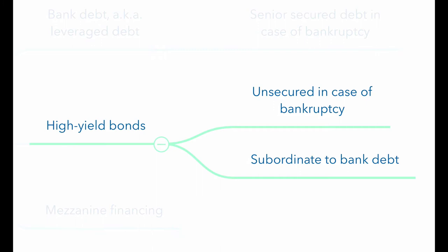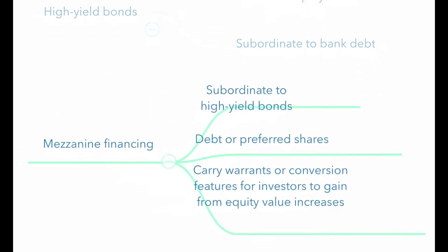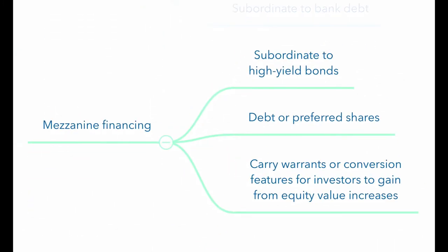As an alternative to high yield bonds, mezzanine financing may also be used. Mezzanine financing refers to debt or preferred shares that usually have attached warrants or conversion options. Being subordinate to both senior and high yield debt, mezzanine financing typically pays a higher coupon rate. In addition to interest or dividends, mezzanine financing offers a potential return based on increases in the value of common equity.